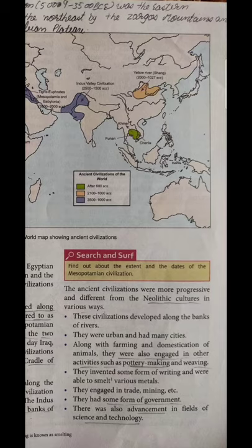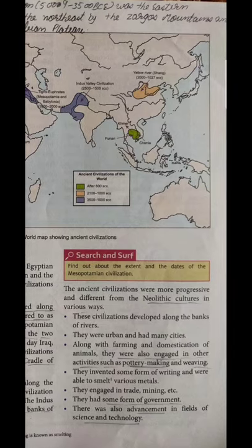Domestication of animals — meaning keeping and raising animals — was also started by these people. They engaged themselves in pottery making and weaving activities. These are the main activities found in these civilizations. Civilization is considered a developed state — a better lifestyle — one step before civilization, the life of people was not so settled or perfect.